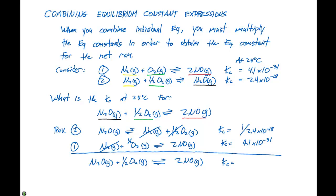If we're determining an equilibrium constant for a net reaction that's made up of two or more reactions, the Kc is going to be the product of all these equilibrium constants. It's going to be 1 divided by 2.4 times 10 to the minus 18 times 4.1 times 10 to the minus 31.